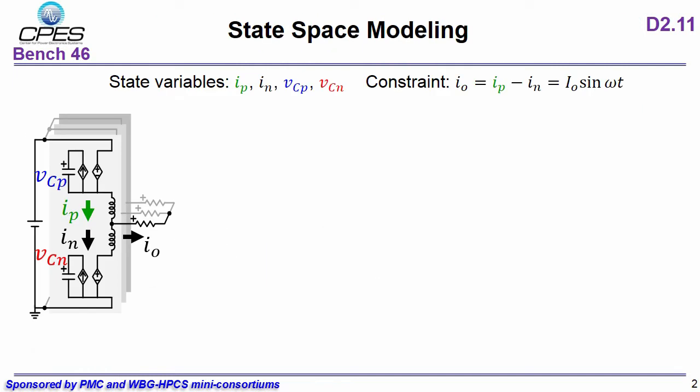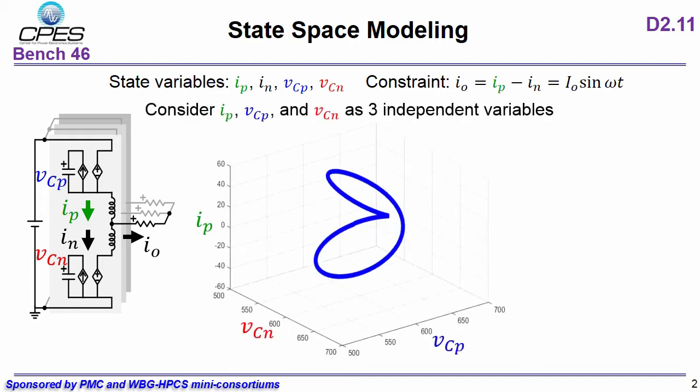Previous CPAS student Chen Li proposed a state-space modeling for MMC. As you can see here, there's two inductors and two capacitors. However, we normally regulate the output current as a sinusoidal wave. Therefore, only one inductor and two capacitors are considered as three independent variables. And the 3D trajectory is shown here.